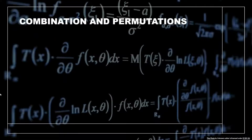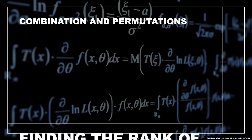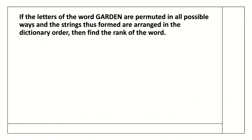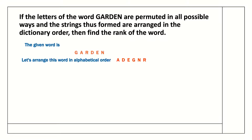Combinations and permutations: finding the rank of a word. If the letters of the word GARDEN are permuted in all possible ways and the strings thus formed are arranged in dictionary order, then find the rank of the word. We will first arrange the letters of GARDEN in alphabetical order: A-D-E-G-N-R.